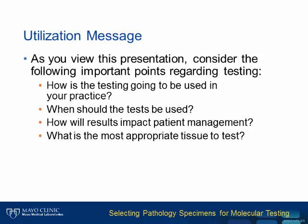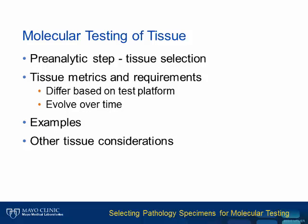As you view this presentation, consider the following important points regarding testing: How is the testing going to be used in your practice? When should the tests be used? How will results impact patient management? And what is the most appropriate tissue to test? The topic of this presentation is selecting tissues and tissue considerations for molecular testing. We will discuss tissue metrics and requirements, which differ based on test platforms, and it is important to keep in mind that the details of tissue metrics change over time as they continue to evolve with the technology.